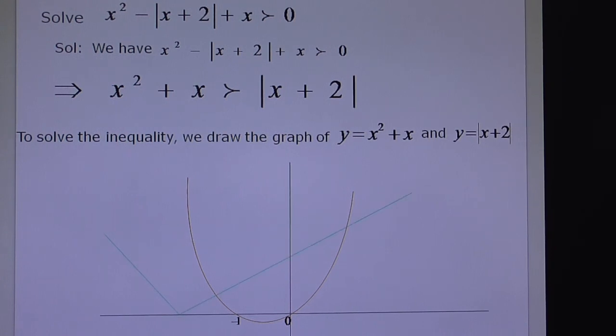These two curves are intersecting at two points. The first one is -√2 and the second one is √2.